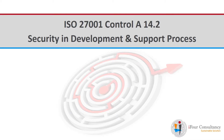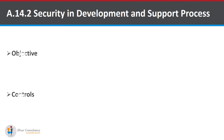Hello everyone. Here we are talking about ISO 27001 control A14, that is System Acquisition Development and Maintenance. In this video, we are going to concentrate particularly on A14.2, that is Security in Development and Support Processes. The objective is to ensure that information security is designed and implemented within the development lifecycle of information systems.